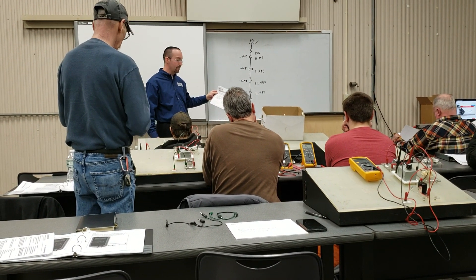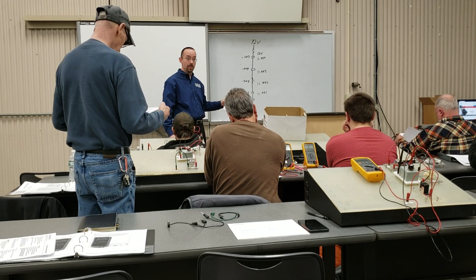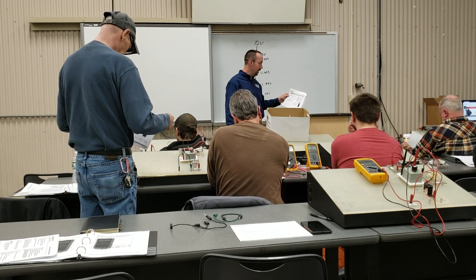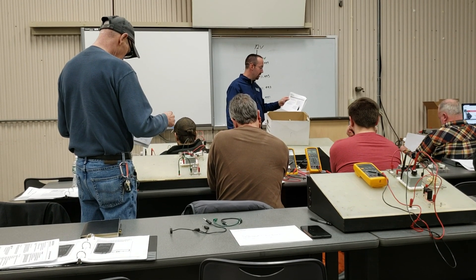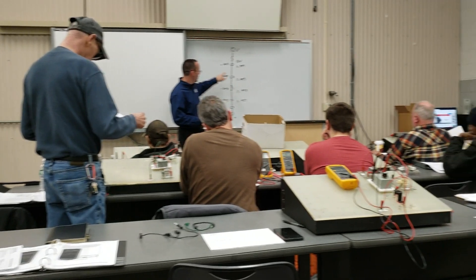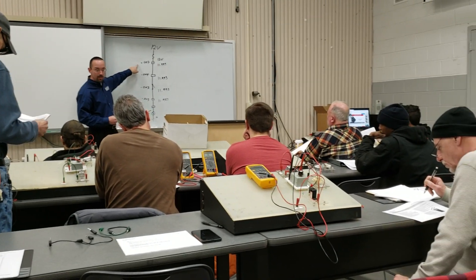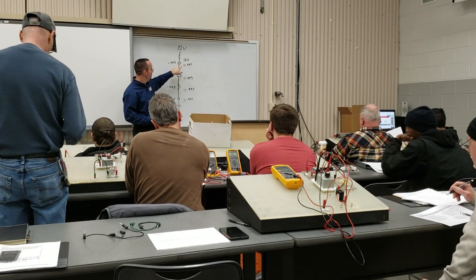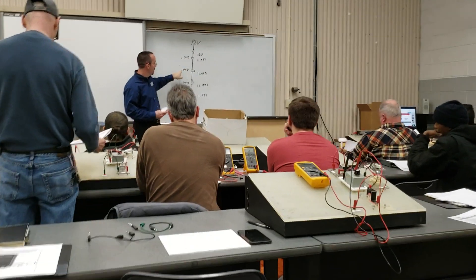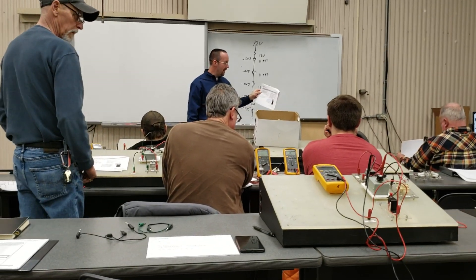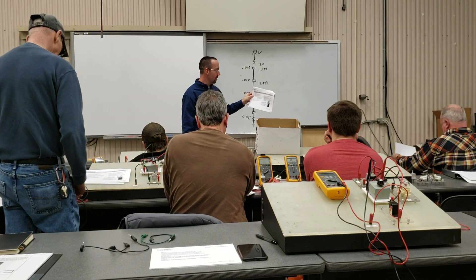The second one says voltage drop can be determined in two ways: by measuring available voltage before and after the load and subtracting the two readings — is that what we did here? We knew what our measurement was and looked at what the difference was. Or by measuring voltage across the load directly.